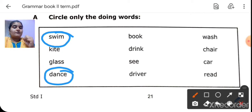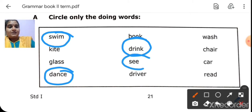Next. Book. It is a thing. And then drink. So, you are doing some action, right? You are drinking water, milk. So, it is an action. So, drink. See. So, you are seeing me now. So, it is an action. Driver. So, driver is a person. It is not an action. Driving. That is only an action.